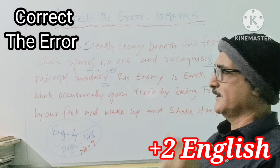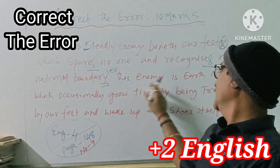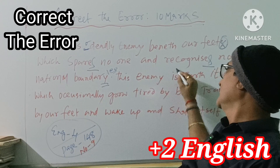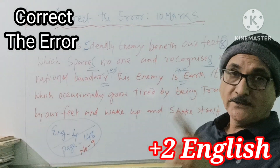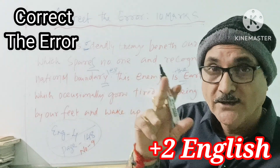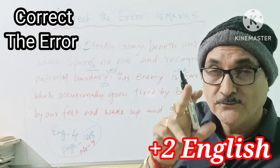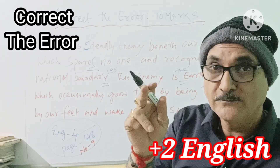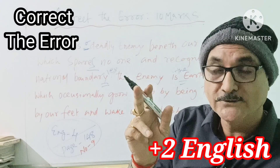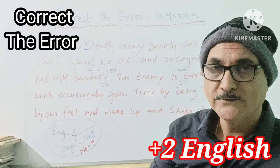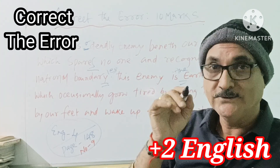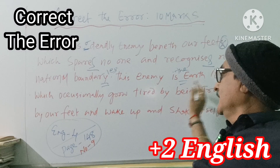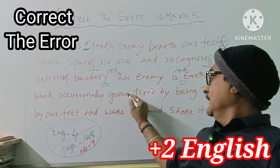Next — this enemy is the Earth itself. The Earth is a unique object which occasionally grows.